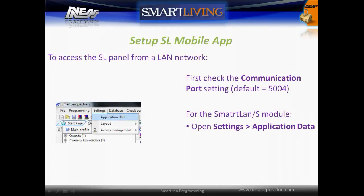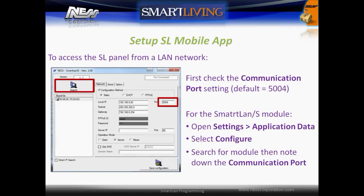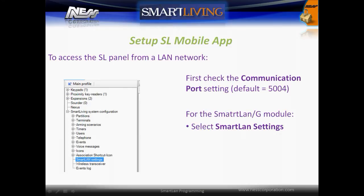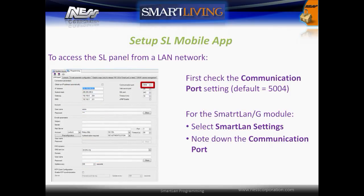To access the panel from a LAN network using the app, first check the communication port settings — the default is 5004. To check this for the Smart LAN S module, open the Settings menu and then Application Data, select Configure, then search for the module and note down the communication port. For the Smart LAN G module, select Smart LAN Settings from the system tree and note down the communication port.